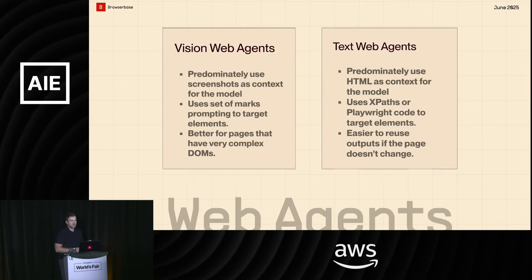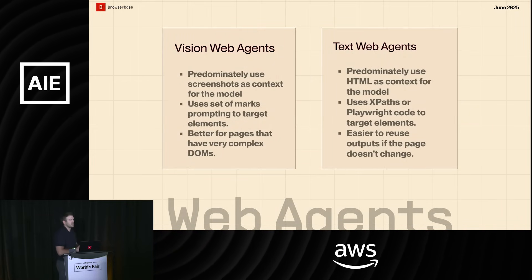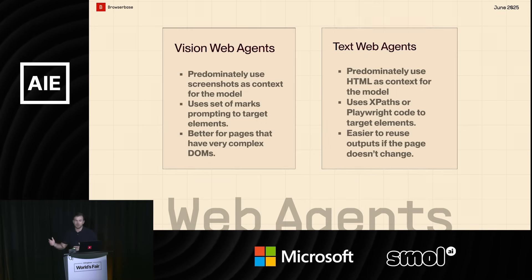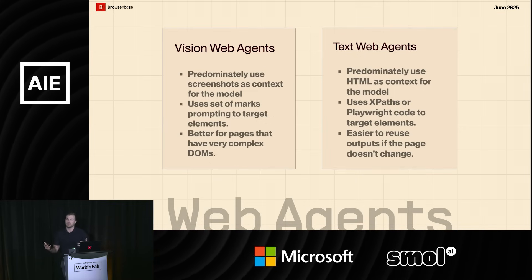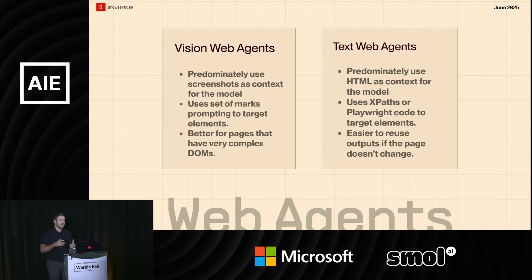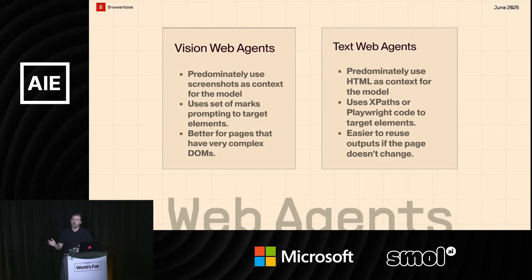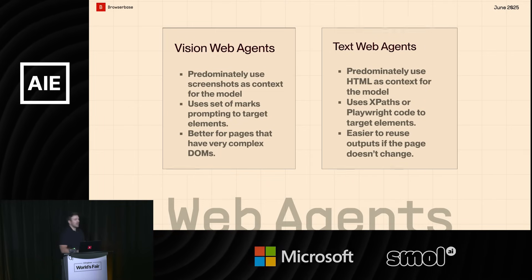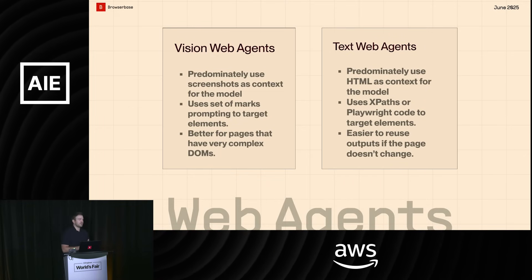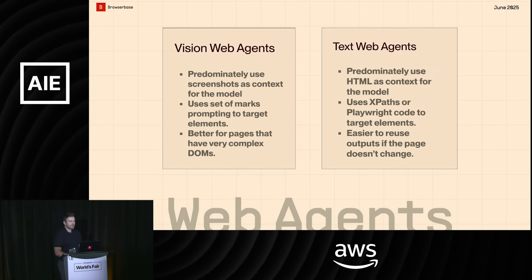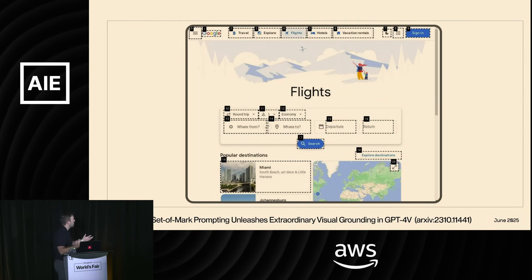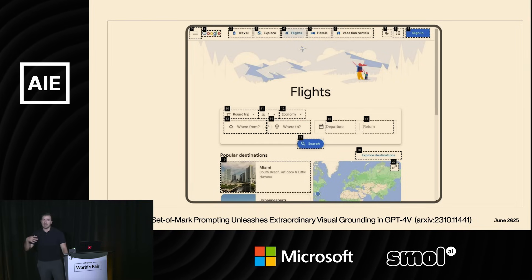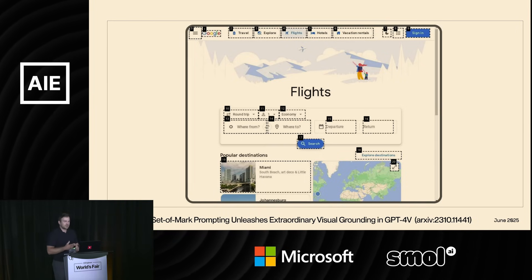There are really two different types of web agents. There are vision-driven agents — ones that predominantly use screenshots as context for the model. They might do some marking up of the screenshot to indicate what box to click on. Or there are text-based web agents, who predominantly use HTML as the context for the model. Here's an example of a vision agent using set-of-marks prompting — you can see these little boxes marking up what you should click, and the model will say: click the box labeled 25.